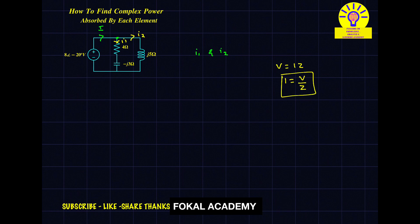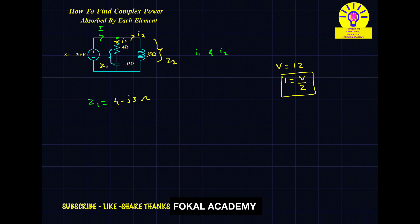Now in the first branch, let us assume impedance Z1, and in the second branch impedance is Z2. First find the impedance of the first branch, Z1. In the first branch, two elements are there — one resistor and one capacitor, both in series. Their impedances are 4 ohms and minus J3 ohms. So Z1 equals 4 minus J3 ohms — whenever impedances are connected in series, just add them. In the second branch, only one element is there — the inductor — so Z2 equals J5 ohms.